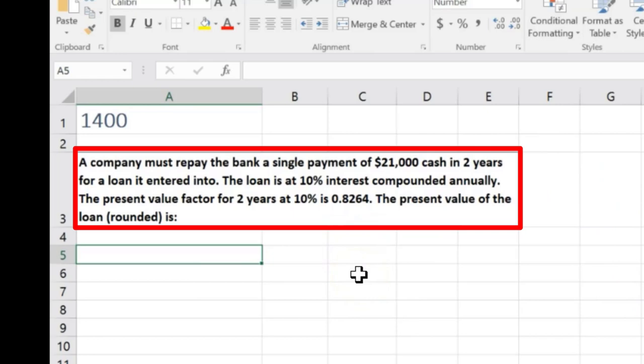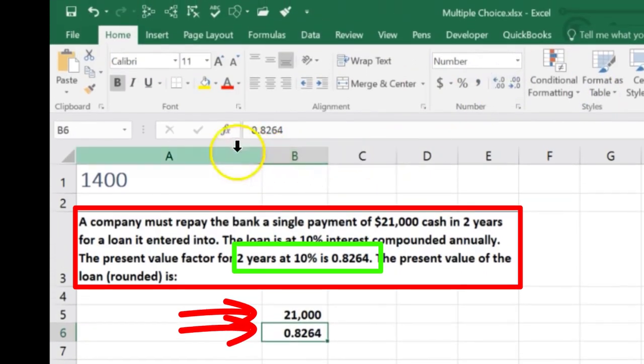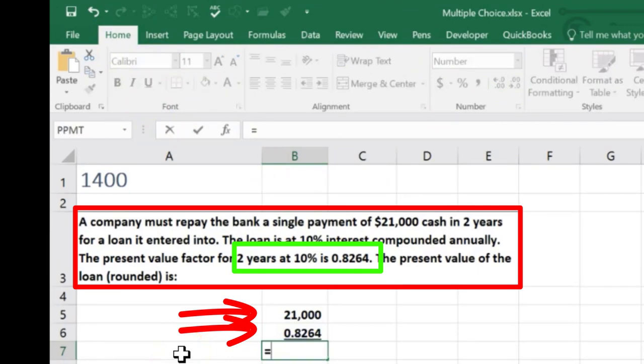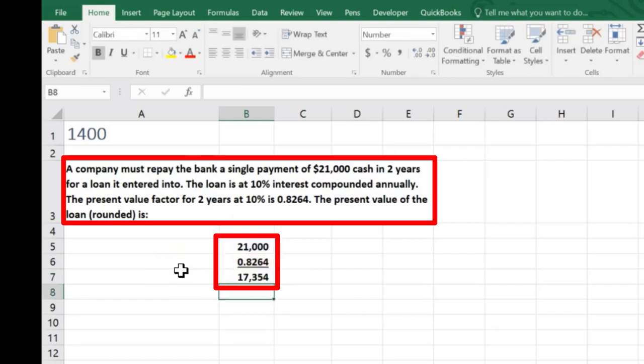In the multiple choice question, we're just going to take that $21,000, and since it's two years time and they gave us the factor of 0.8264, I'm going to add decimals, go to Home tab, Numbers, add four decimals. Going to underline, Home tab, Font, Underline. Then we're just going to say this equals the $21,000